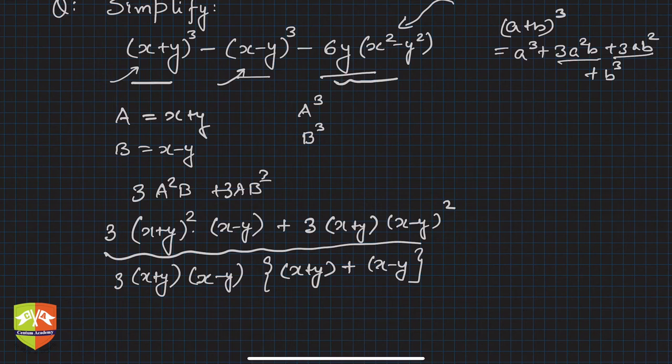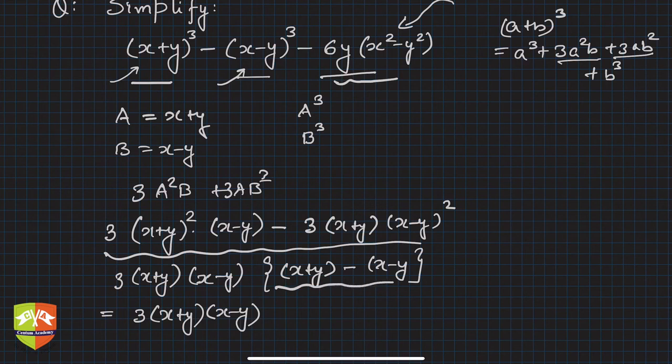If the other way around - if I take minus - then what happens? This becomes this simply, and here I would have got minus, here I would have got minus.